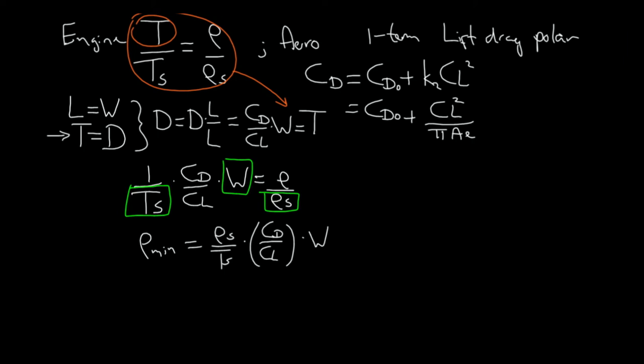And since we are interested in minimum air density we can also state that CD over CL should be minimum, or in other words we can state that CL over CD should be maximum. That makes sense, right? We have to fly in the most efficient aerodynamic configuration to reach the maximum altitude.